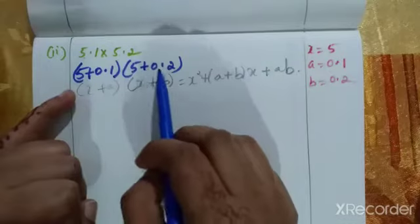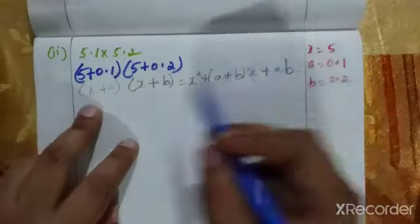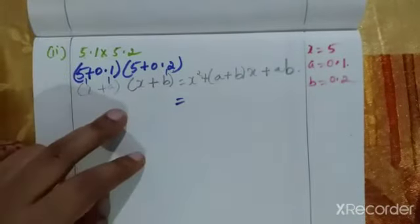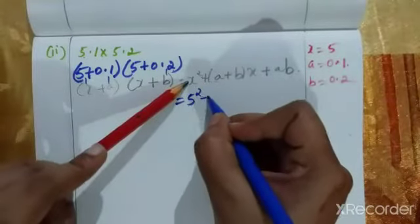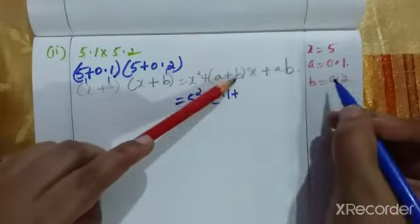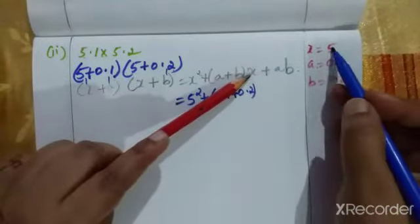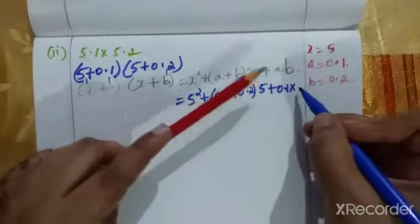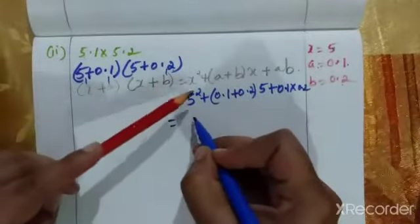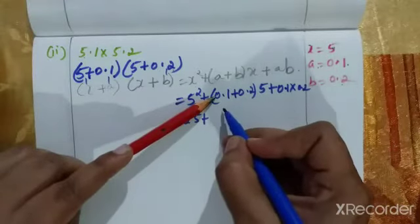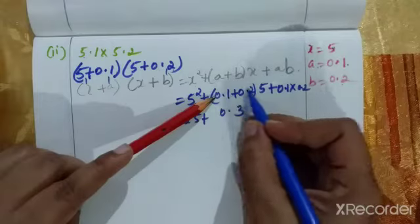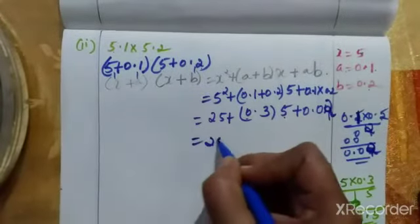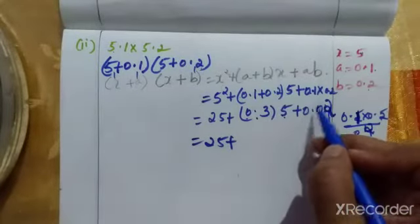We write 5+0.1 and 5+0.2, so x value is 5, a value is 0.1, and b value is 0.2. Now applying the identity: x² + (a+b)x + ab becomes 5² + (0.1+0.2)×5 + (0.1×0.2). That gives us 25 + 0.3×5 + 0.02.